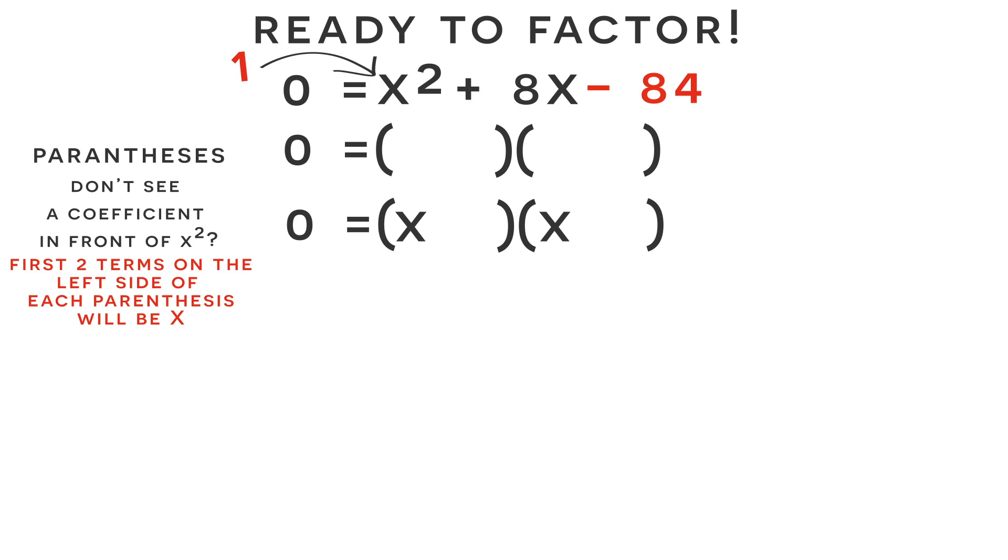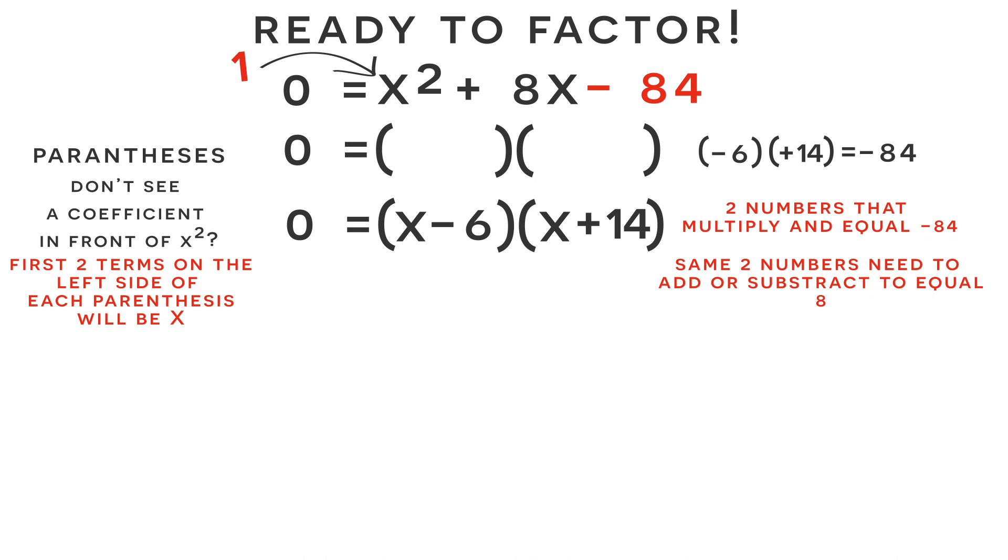So now at this point we need to fill in the right side of each parentheses. So in order to do this, we need to find two numbers that multiply and equal our constant on the right of negative 84. And these same two numbers also need to add or subtract to equal our middle constant of positive 8. So the two numbers that fit this criteria are negative 6 and positive 14. Negative 6 times positive 14 is equal to negative 84, which is our constant on the right, and negative 6 plus positive 14 is equal to positive 8, which is our coefficient in the middle.